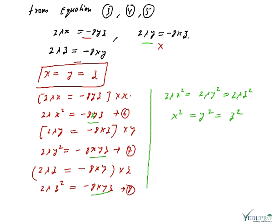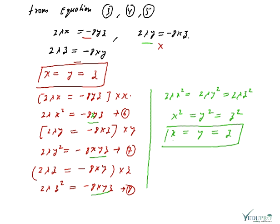Taking the square root, we get x = y = z. This is what we had to prove. Since all side dimensions of the rectangular solid are equal, that rectangular solid is always a cube.